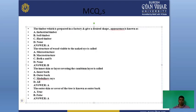Now we will discuss some MCQs related to today's topic. First question: the timber which is prepared in a factory and given a desired shape and appearance is known as — industrial timber, soft timber, hard timber, or none? The answer is industrial timber. Second question: the structure of wood visible to the naked eye is called — micro structure, macro structure, both, or none? The correct answer is macro structure.